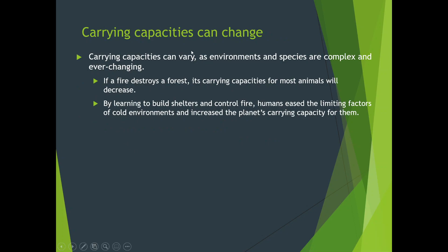Carrying capacity can vary because environments and species are complex and ever-changing — it's never a fixed item. It fluctuates depending on environmental conditions; for instance, a fire destroys a forest and the carrying capacity for most animals decreases. By learning to build shelters and control fire, humans eased the limiting factors of cold environments, increasing the planet's carrying capacity for our species — we can now live in places we couldn't before.